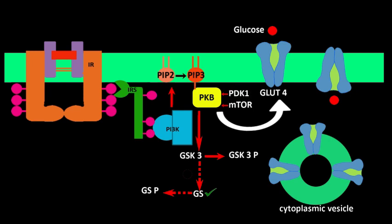PIP3 provides a binding site for protein kinase B (PKB, also known as AKT) and PDK1. PDK1 phosphorylates and activates PKB, but this phosphorylation is necessary yet not sufficient for full PKB activation. Activation of PKB also depends on another kinase, mTOR, which also phosphorylates PKB. Once activated, PKB dissociates from the plasma membrane and moves into the cytosol and nucleus, where it is directly involved in glucose transport and glycogen synthesis.